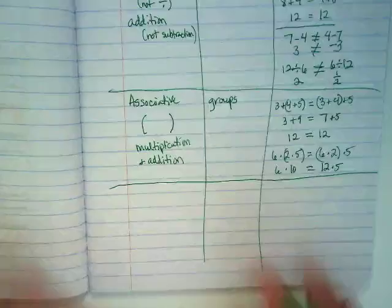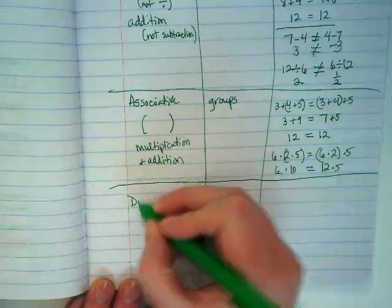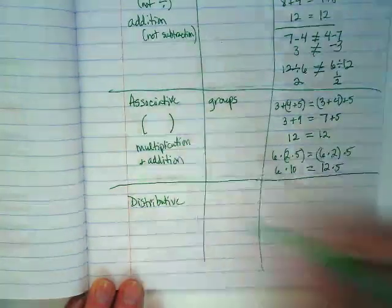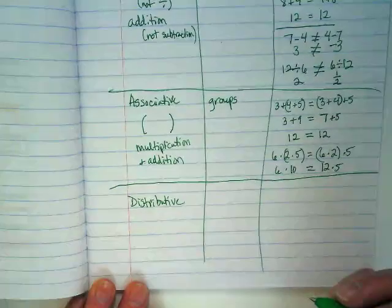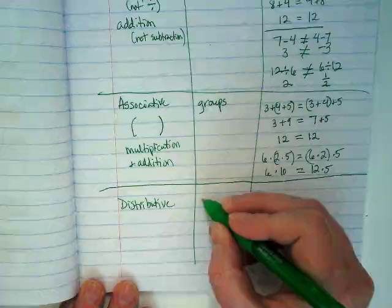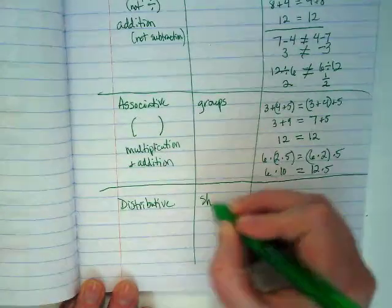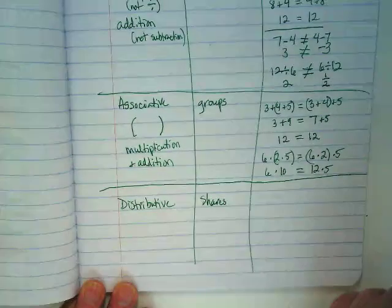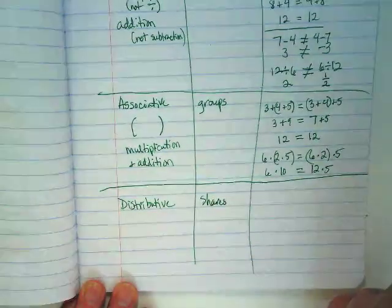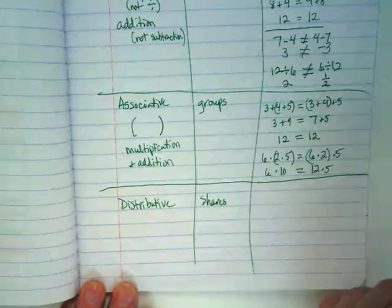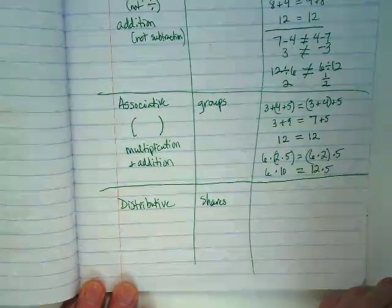Last property for this side of our notes is one of my favorites, which is good because I use it a lot in algebra too. It's called the distributive property, and this is one that shares. I always think about distributive as - my husband worked for UPS. What is UPS known for doing? Delivering boxes.